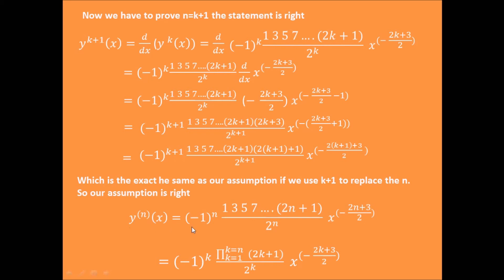So the assumption is true for the k plus 1 derivative. We have proved that the nth order derivative for the function can be written as minus 1 to the power of n times 1 times 3 times 5 times 7 and so on times 2n plus 1, divided by 2 to the power of n, times x to the minus 2n plus 3 divided by 2. If you remember how to abbreviate the product in the numerator, it can be written using product notation: the product from k equals 1 to n of 2k plus 1, divided by 2 to the k, times x to the exponent minus 2k plus 3 divided by 2.